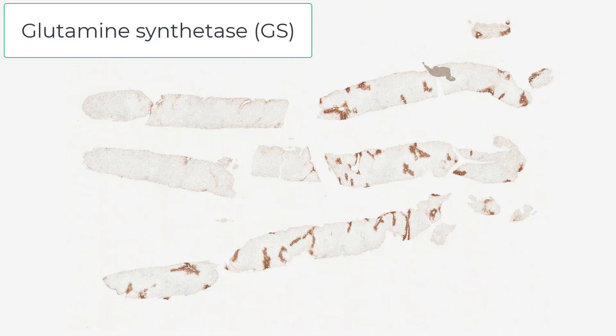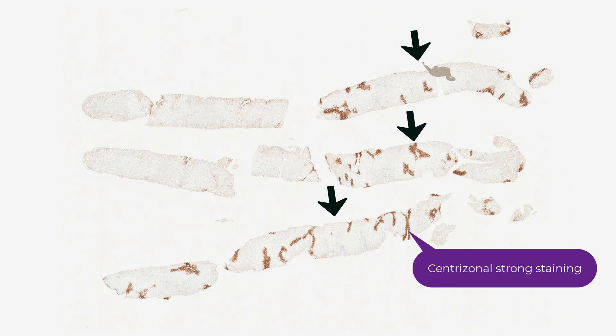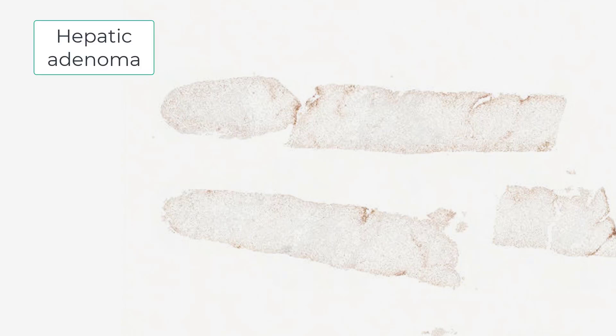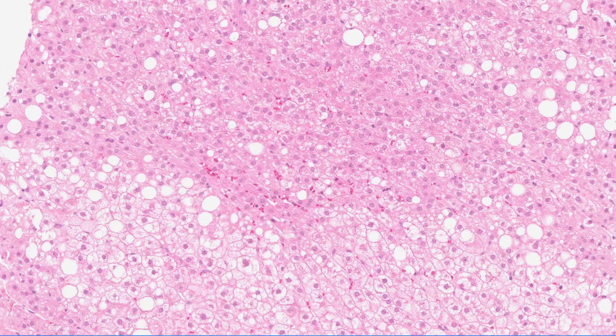If you have this stain — this is glutamine synthetase, or GS — believe me, this is the next best thing after sliced bread. Because right off the bat, it tells you several things. It tells you that this, this, and this is all normal liver, because you see that strong centrilobular staining for GS. That piece and that broken piece is lesional tissue because it lacks that staining. There is no other stain that can do this for us, as far as I'm aware, and do it so brilliantly.